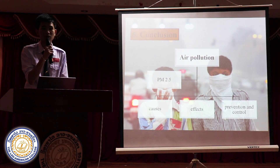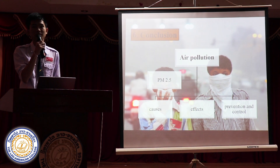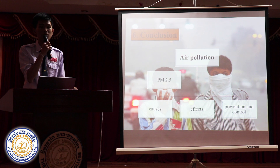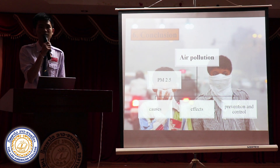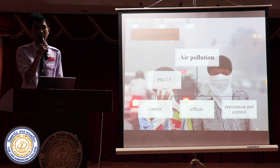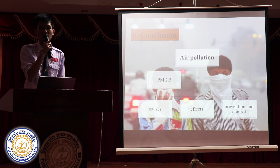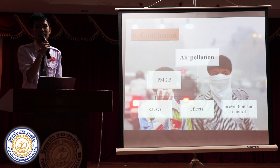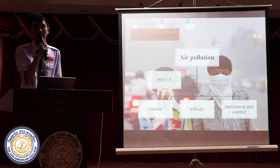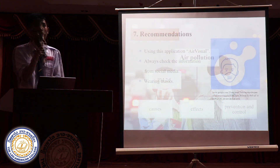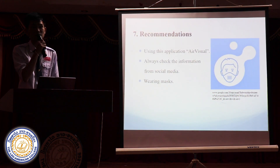And the last is prevention and control. For prevention, you have to use fewer vehicles and try to use more bicycles to save the air, and you must try to bring recycling to reduce burning and releasing carbon dioxide into the air. For control, you must wear a mask when you go outside, and remember to avoid doing outdoor activities that affect nature.